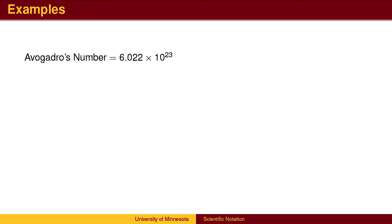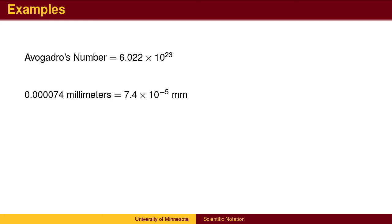Returning to some examples, Avogadro's number has 23 digits after the initial digit and is represented as 6.022 times 10 to the 23rd. The wavelength of red in the visible light spectrum is 0.000074 millimeters. To express this in scientific notation, we need to move the decimal point until a single non-zero digit is to the left of the decimal. In this case, we move the decimal until it is to the right of the 7 — we move the decimal point 5 spots — so the scientific notation is 7.4 times 10 to the negative 5th.